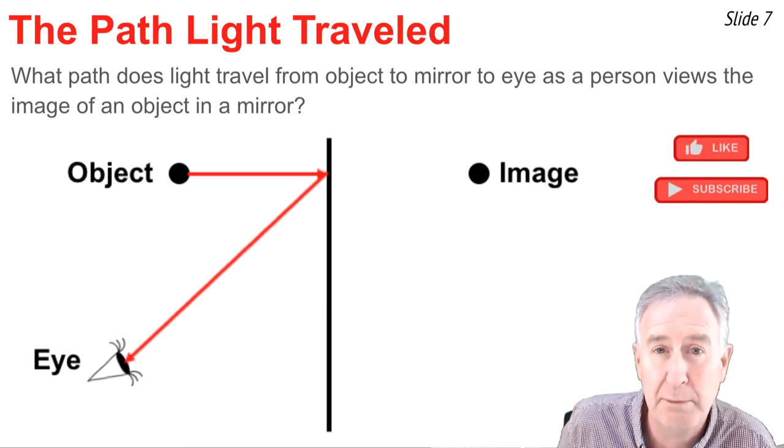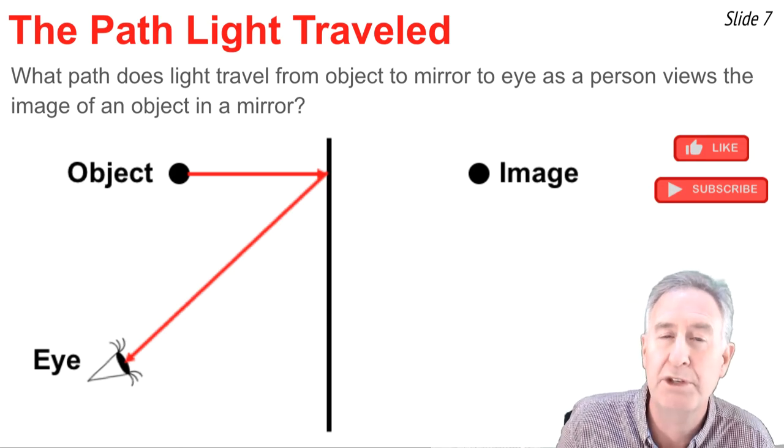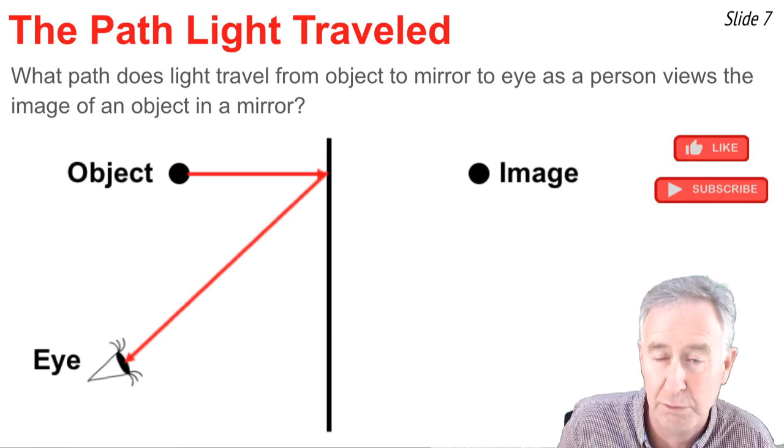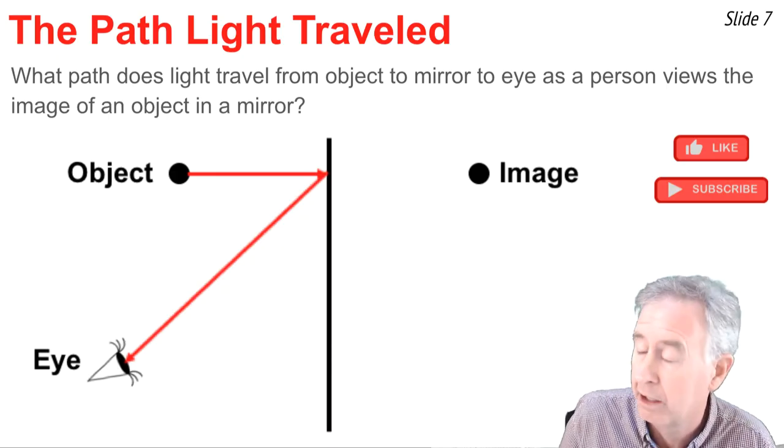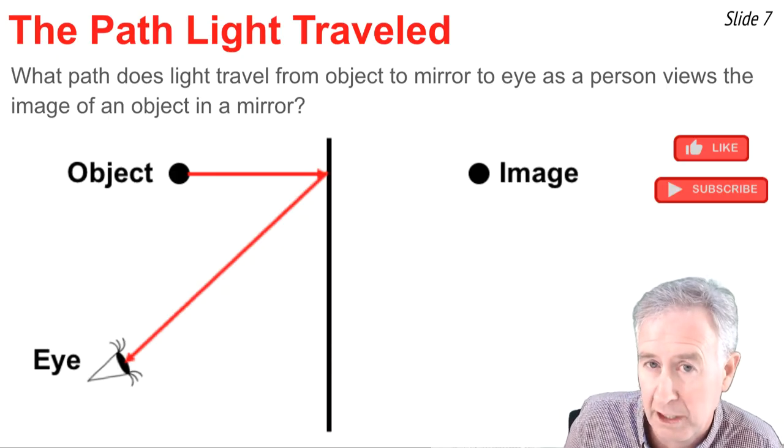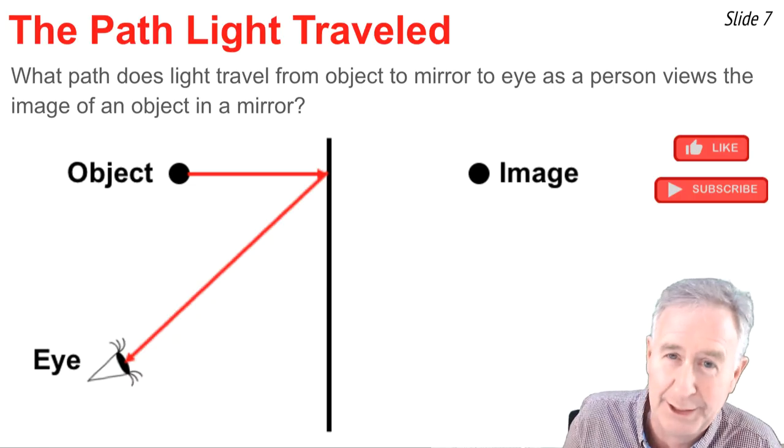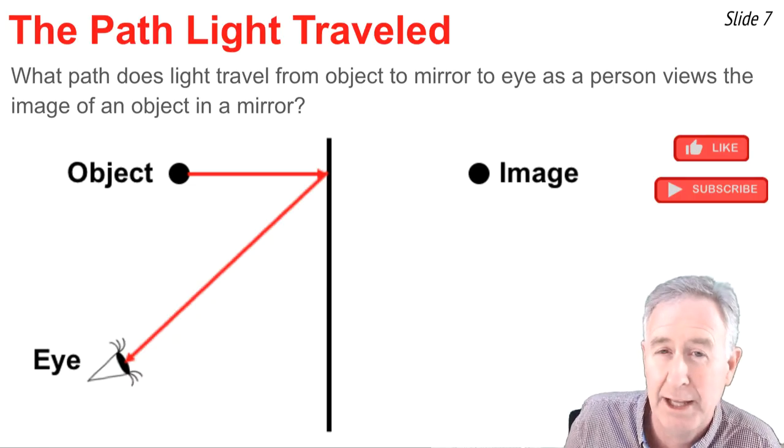Nope, that's not correct either. They're for the same reason. The reflected ray represents where the eye is looking. And if we extended this backwards behind the mirror, this reflected ray would not intersect at the image location. So the eye is not looking along the line of sight at the image. How about this one?